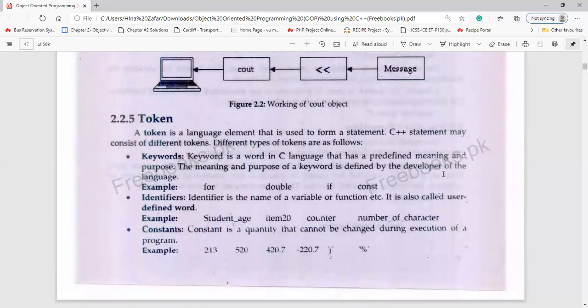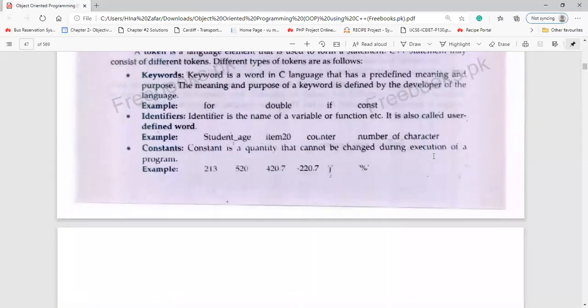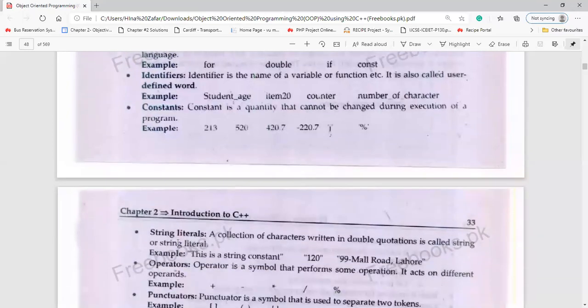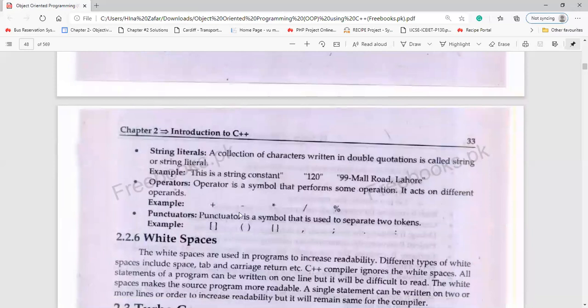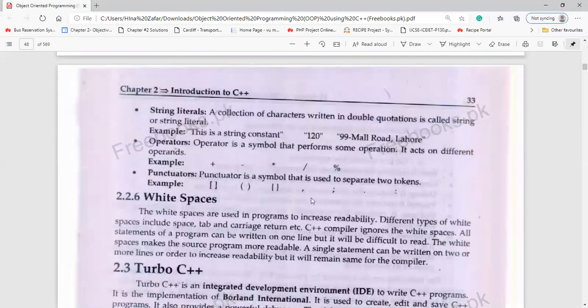Then we have identifiers. These are your variables or function names, and these are user-defined words. Then we have constants. Constants are quantities which do not change during execution. When you write them, once you assign them. Then we have string literals. A collection of characters written in double quotations is called string or string literals. You know operators, there is no need to explain. You also know punctuation. Sometimes you find in programming, braces, parenthesis, comma, semicolon, single quotation mark, all these things.